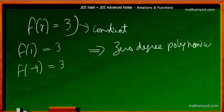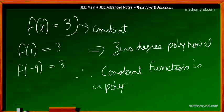It simply means that a constant function is a polynomial of degree 0.